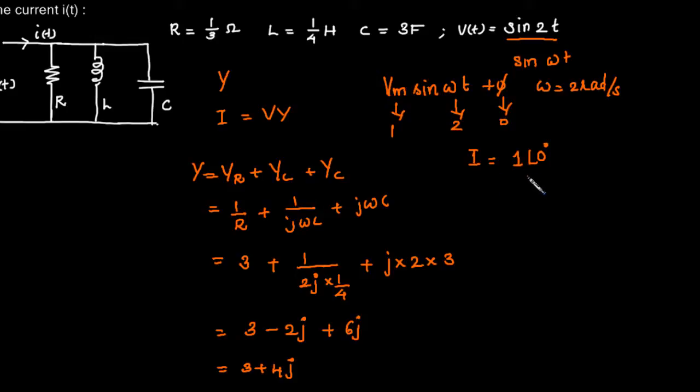Into 3 plus 4j. So this will give 5 angle 53.12 degrees. So what is the final answer of current in terms of sine? We can say it is 5 sine (2t + 53.12°) amperes.